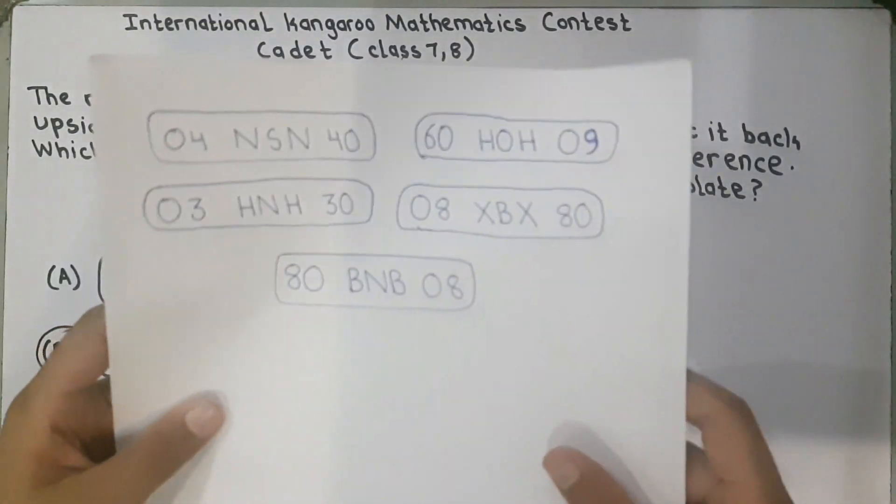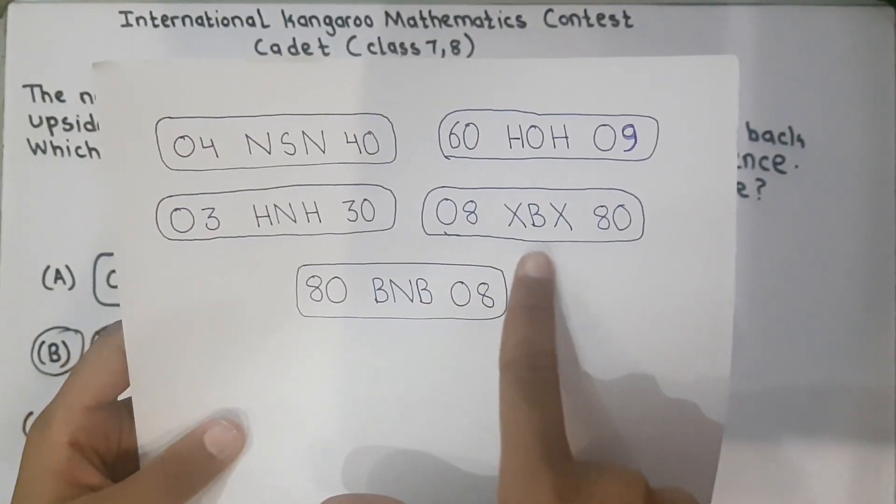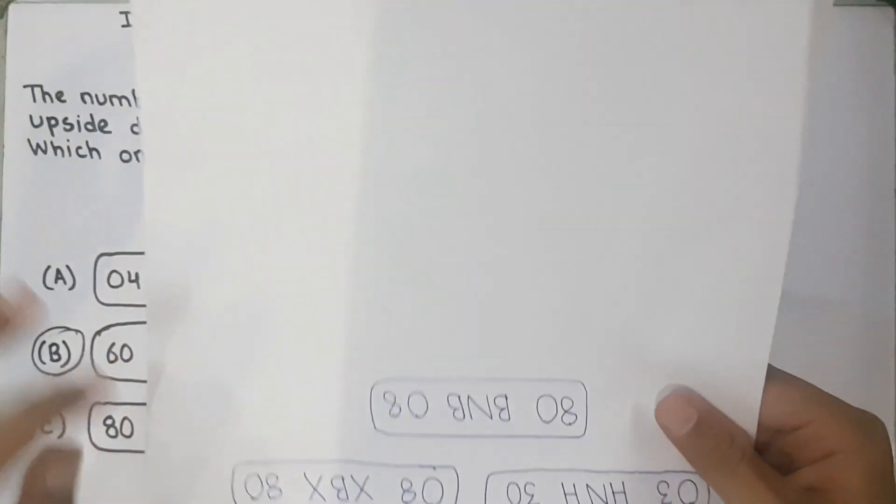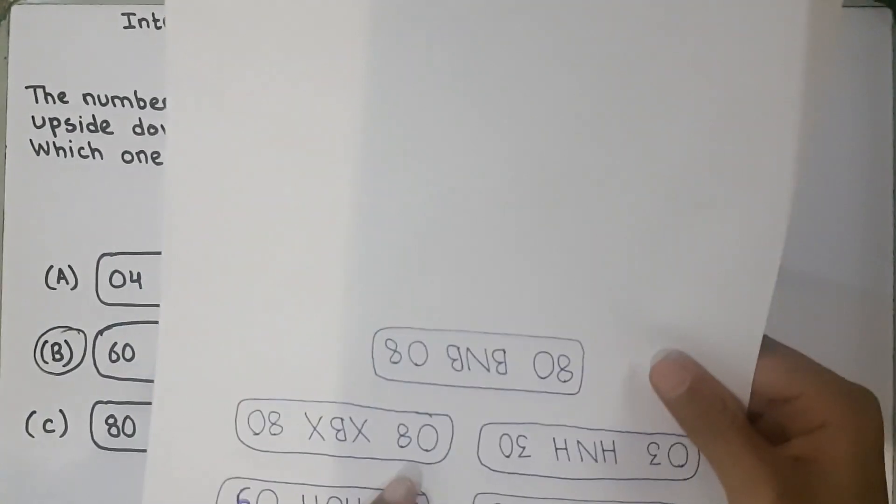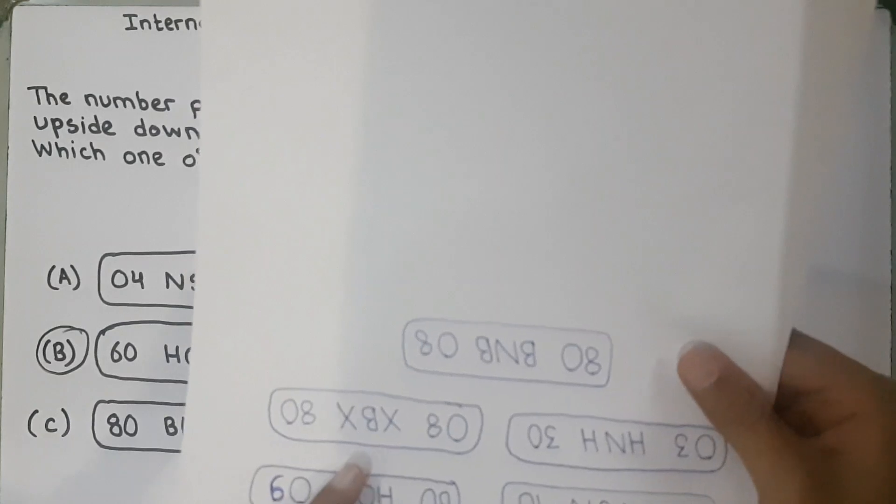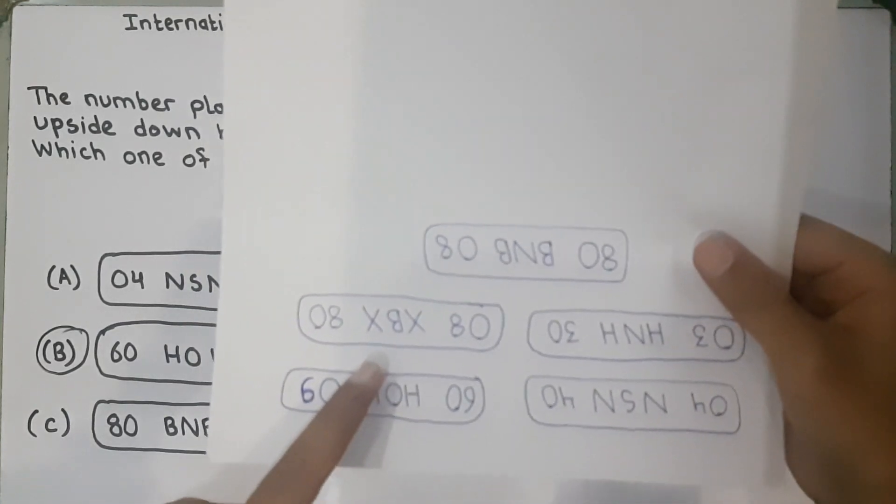Now we will check. 08 XBX 80. But B is upside down. So this is also not correct.